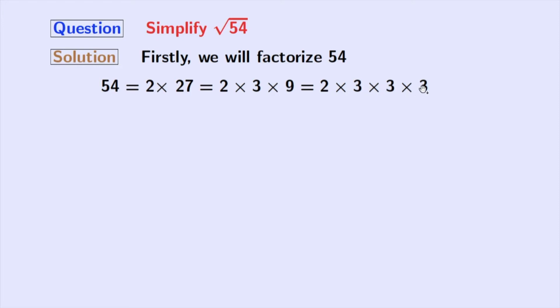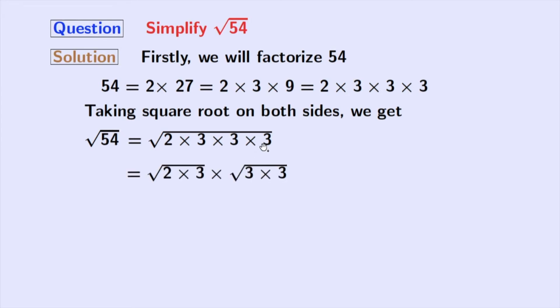Now, we will take square root on both sides and doing that we get square root of 54 is equal to square root of 2 times 3 times 3 times 3. After grouping, we get square root of 2 times 3 times square root of 3 times 3.